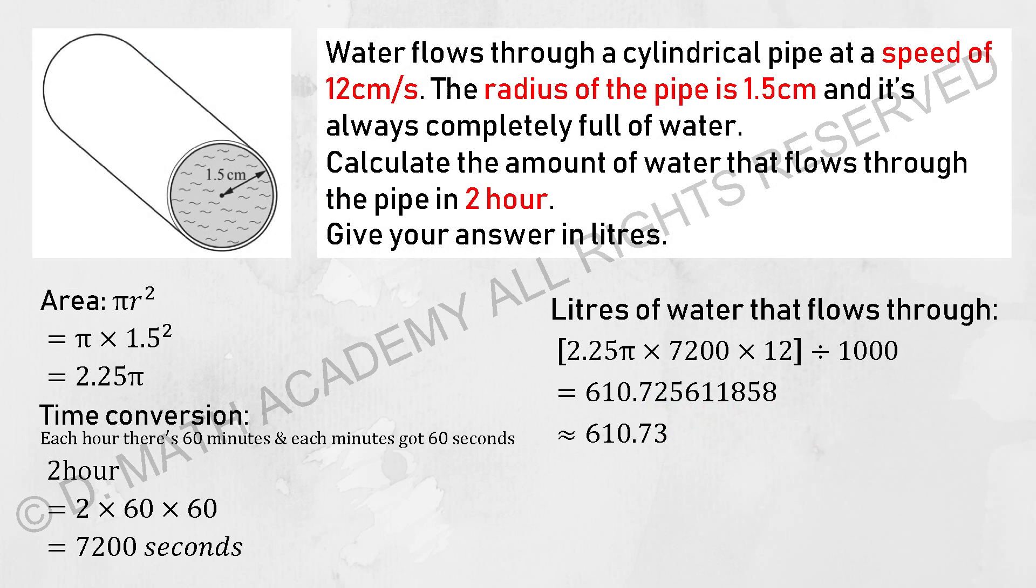The water that flows through a cylindrical pipe at a speed of 12 cm per second. The radius of the pipe is 1.5 cm. It is always completely full of water. Calculate the amount of water that flows through the pipe for 2 hours.